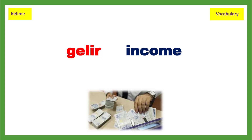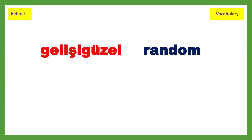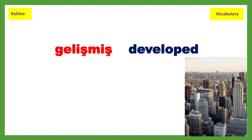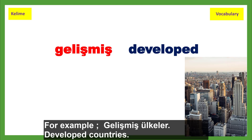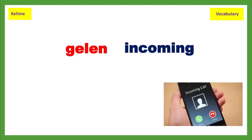Vocabulary exercise. Gelir — Income. Geleneksel — Traditional. Gelişigüzel — Random. Gelişmiş — Developed. For example: Gelişmiş ülkeler — Developed countries. Gelişme — Development.